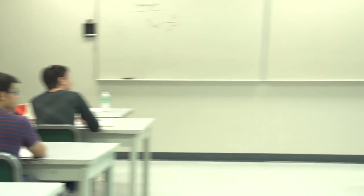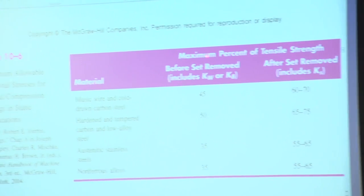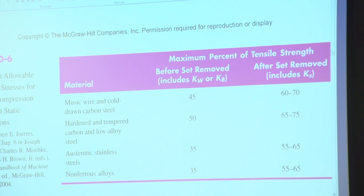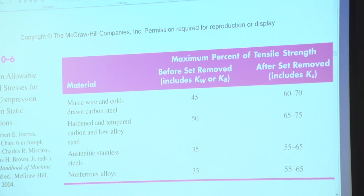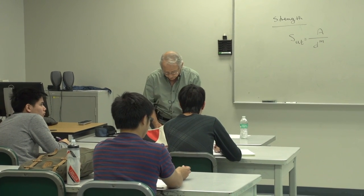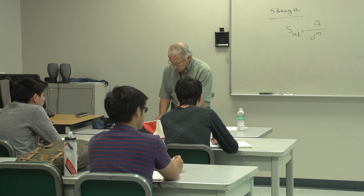This is a sample of what you had before — with set removal and without set removal. Maximum percent of tensile strength: that's the allowable torsional stresses for helical springs. We generally use the S_UT equation to come up with S_UT, and then everything else we find from S_UT. One of the things we find is the tensile strength of the material in torsion.